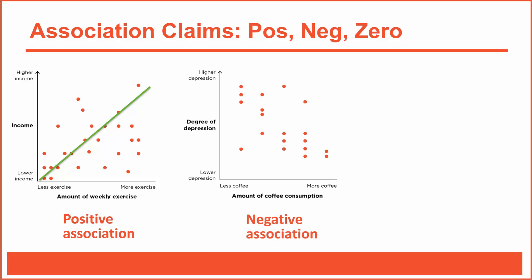Negative associations, also known as negative correlations, work in the opposite direction. In this example, the variable on the x-axis represents coffee consumption from low to high, and the variable on the y-axis represents degree of depression from low to high. You might notice a different type of trend: people who drink more coffee tend to have lower levels of depression. The negative slope of the trend line shows this is a negative association or negative correlation. When the association is negative, the two variables tend to move in opposite directions — increases in one variable are associated with decreases in the other, and vice versa.